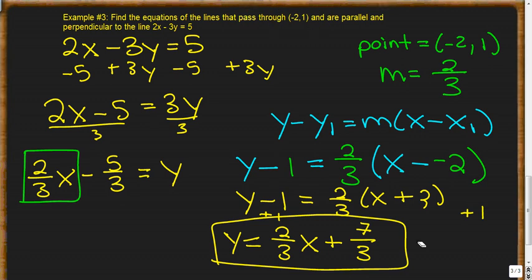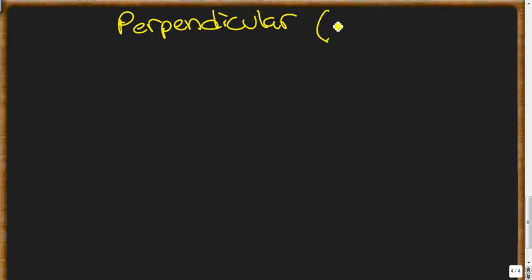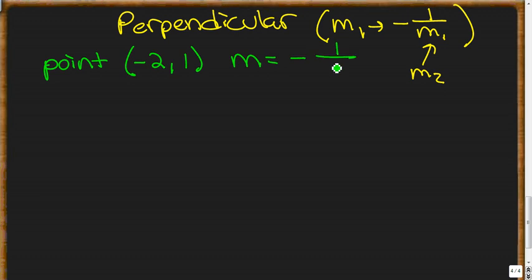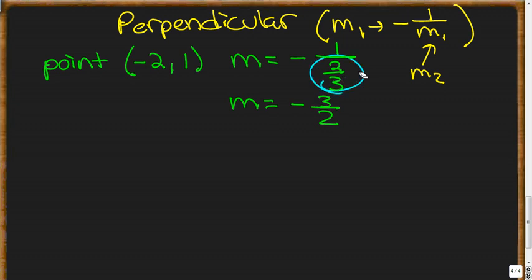For the perpendicular line, we need the negative reciprocal slope. The slope from the parallel line is ⅔, so our perpendicular slope is -1 ÷ (⅔) = -3/2. Dividing fractions: we flip and multiply, so 1 × 3/2 gives us negative 3/2. We still use the same point (-2, 1) but with the new slope.